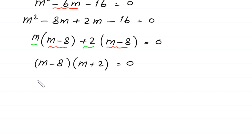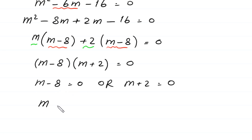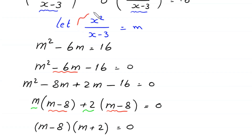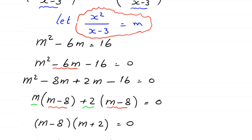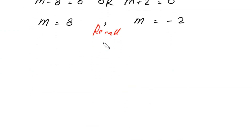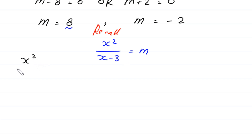From here, either m − 8 = 0 or m + 2 = 0. So m = 8 or m = −2. To find x, we recall that x²/(x − 3) = m. Substituting m = 8: x²/(x − 3) = 8.